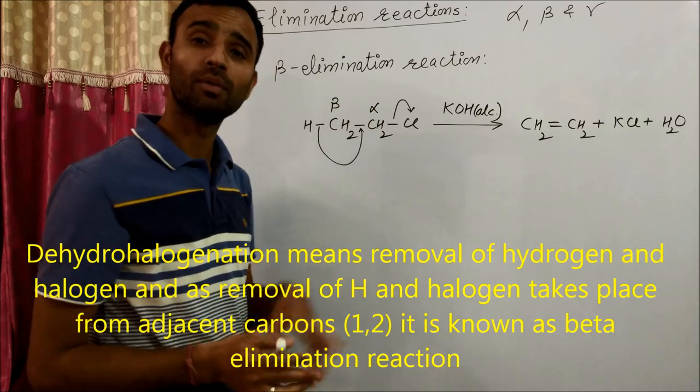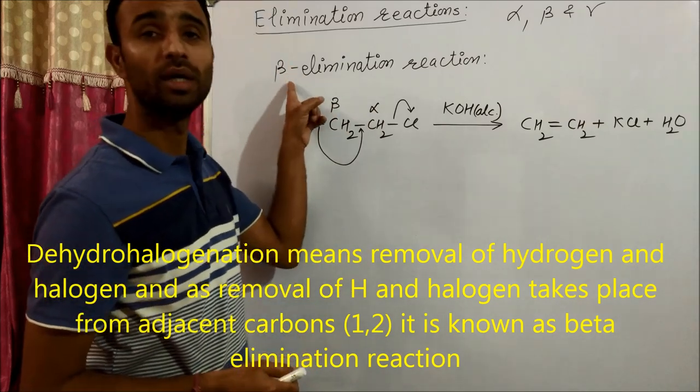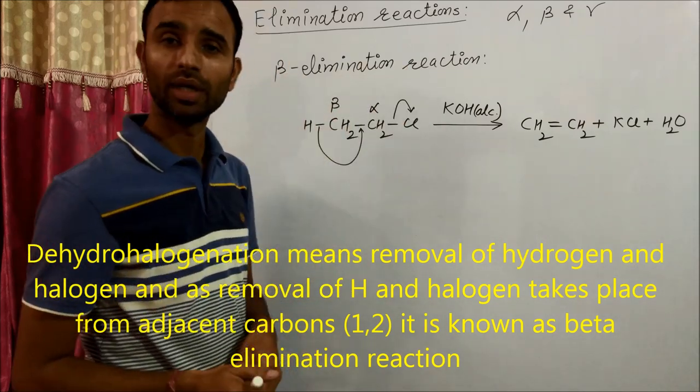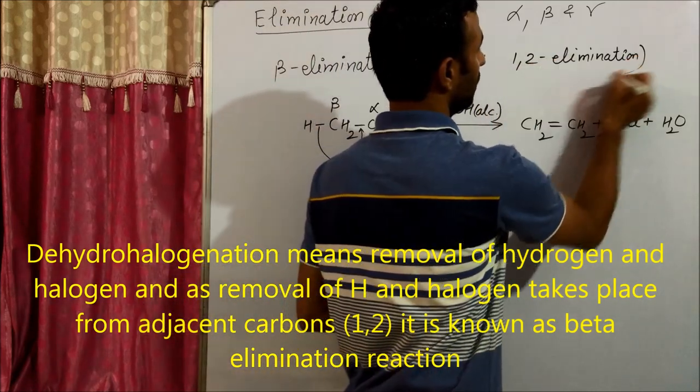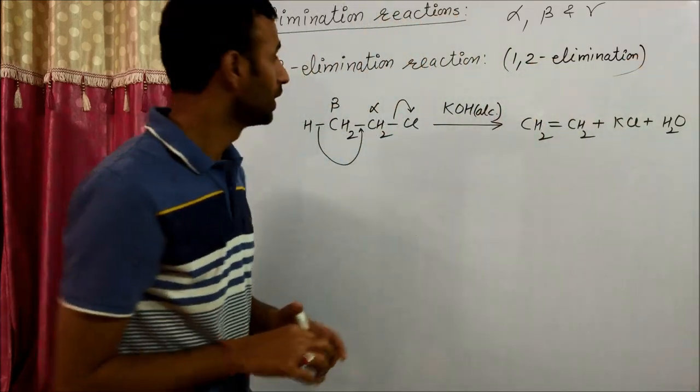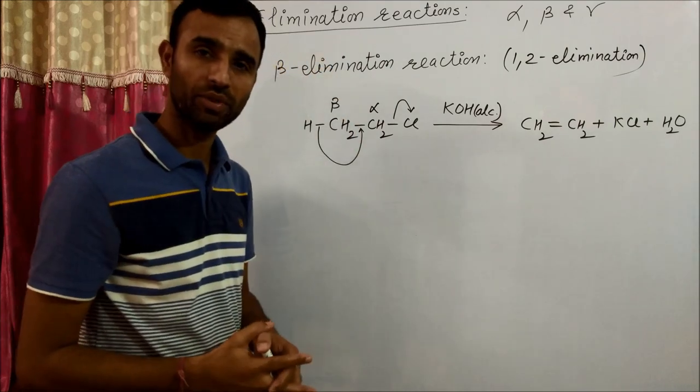Another group is removed from beta. That's why it is known as beta elimination reaction, or 1,2-elimination. It is the most important type of elimination reaction.